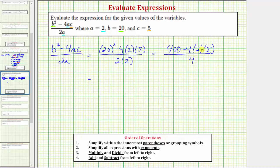And now we continue simplifying the numerator. Notice how we have subtraction and multiplication. And we always multiply and divide from left to right before we add and subtract from left to right. So the next step is to find this product here. 4 times 2 is 8. 8 times 5 is 40. So the numerator simplifies to 400 minus 40. The denominator is still 4.